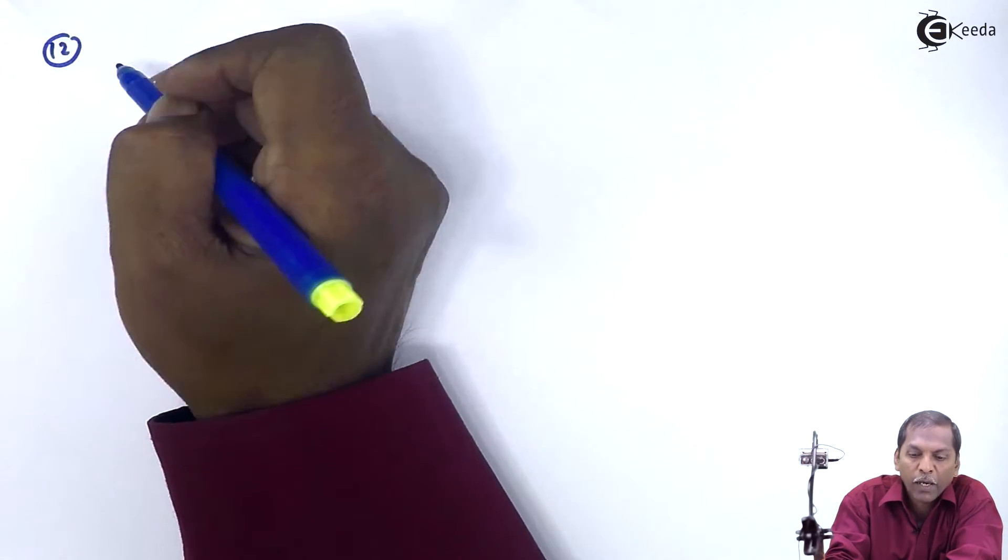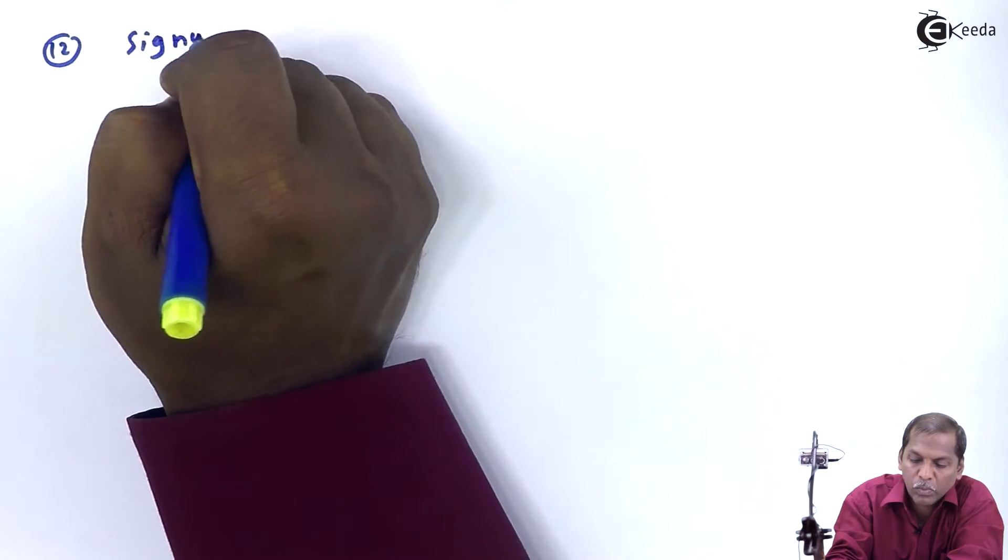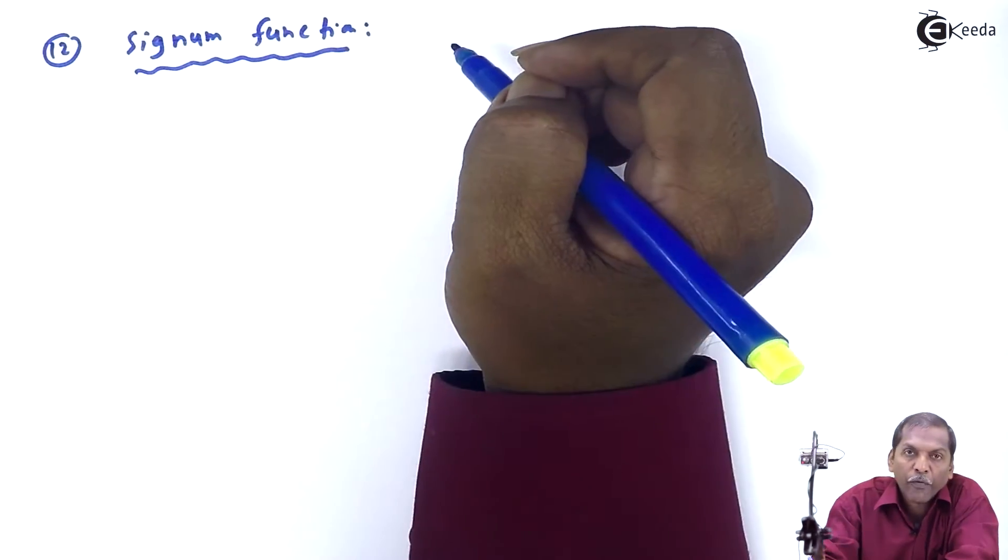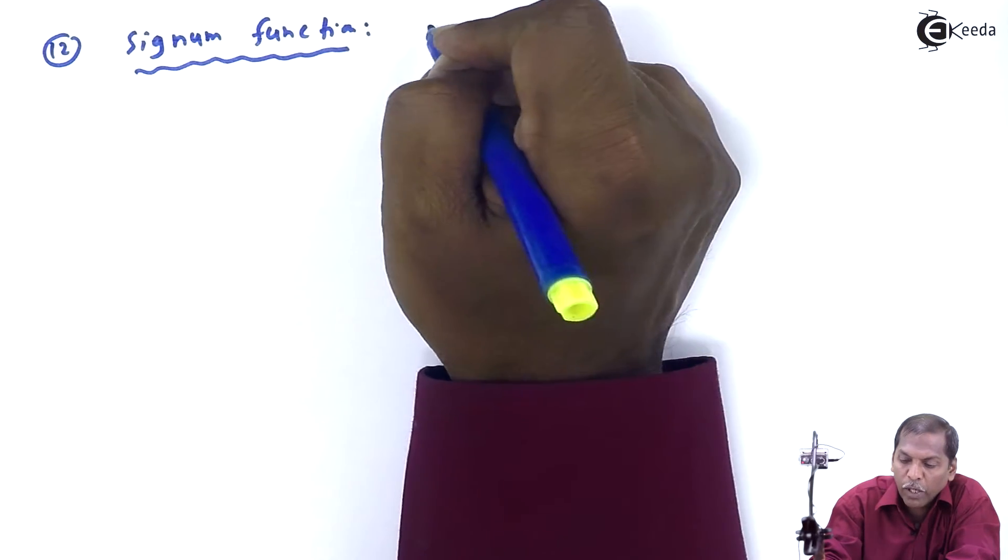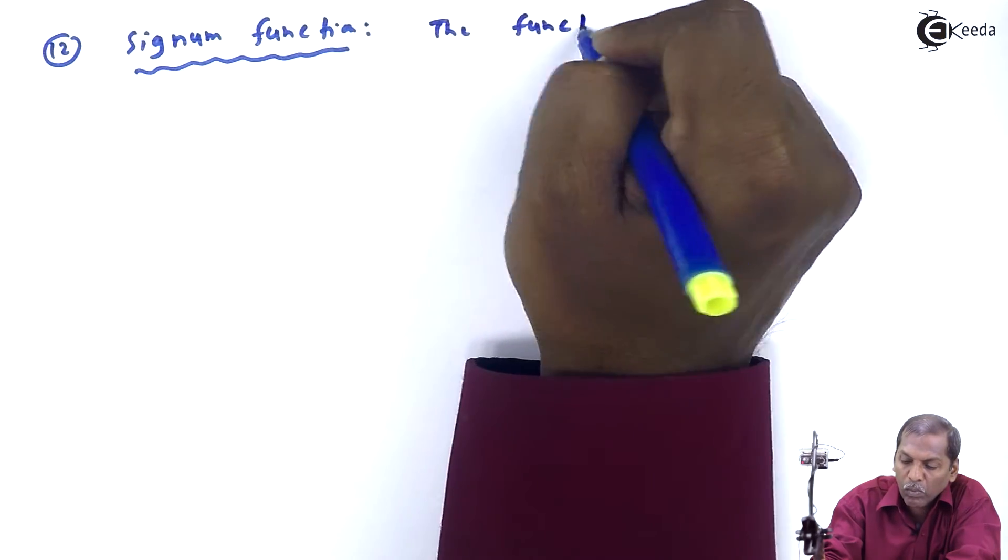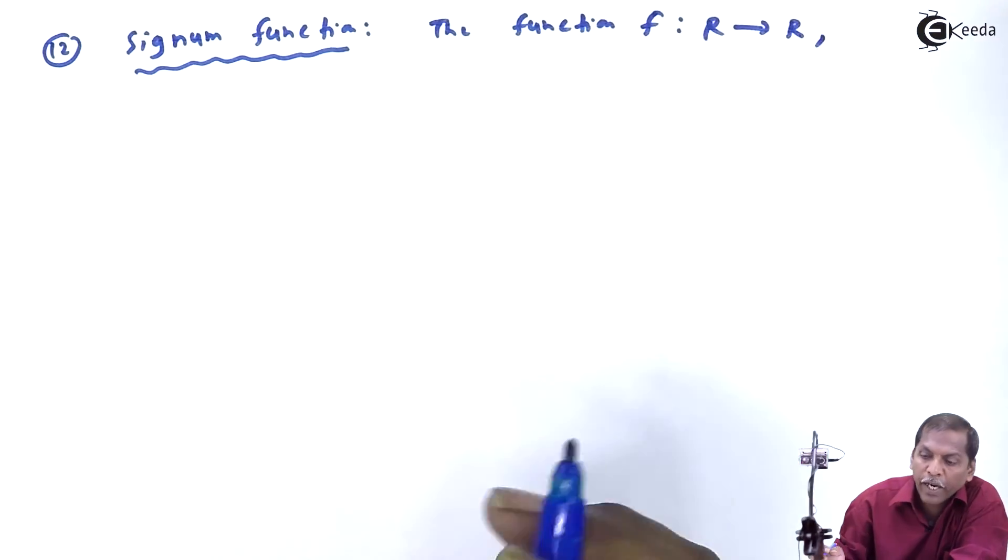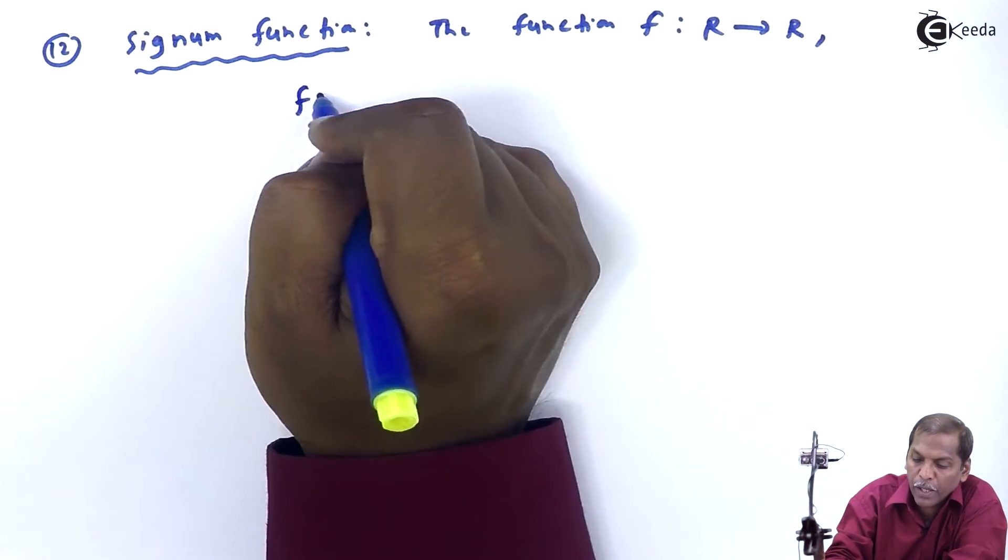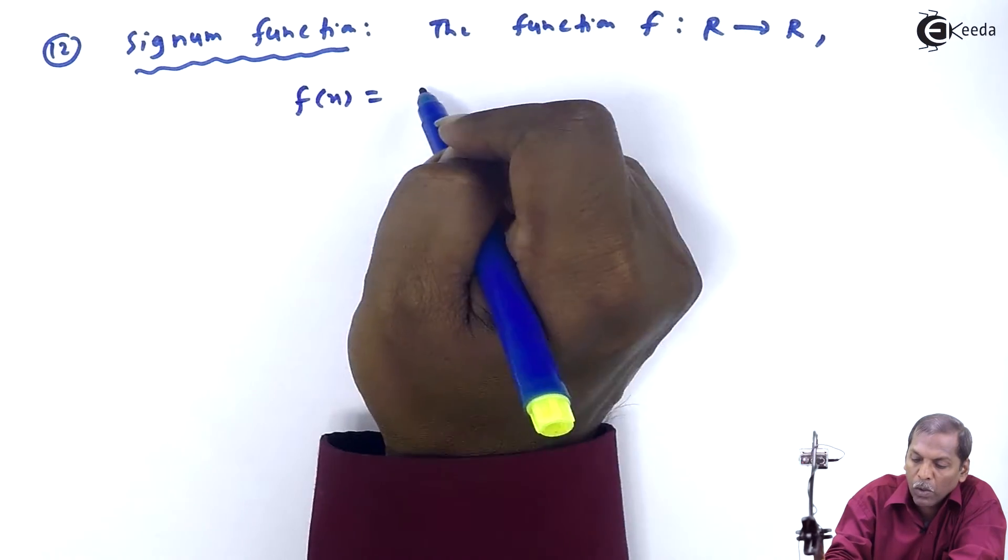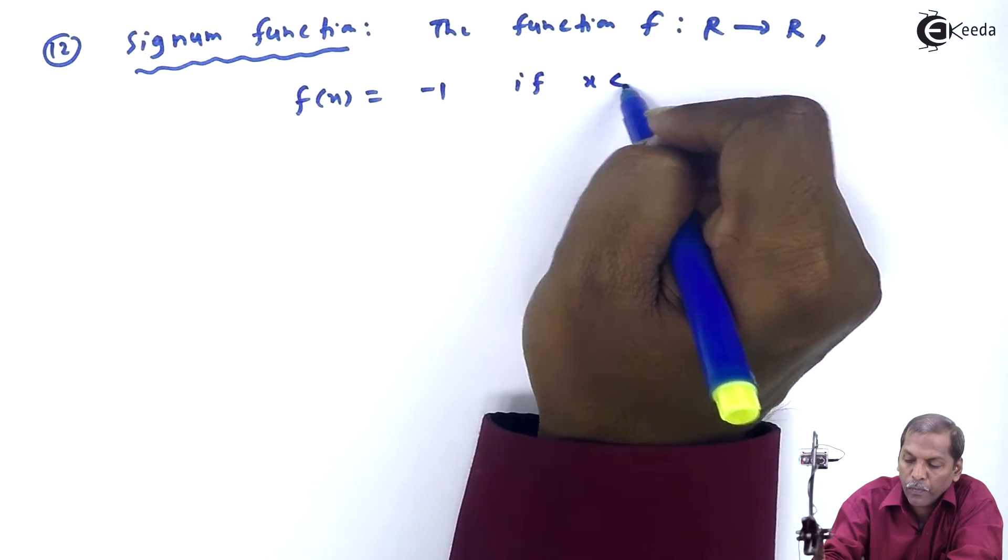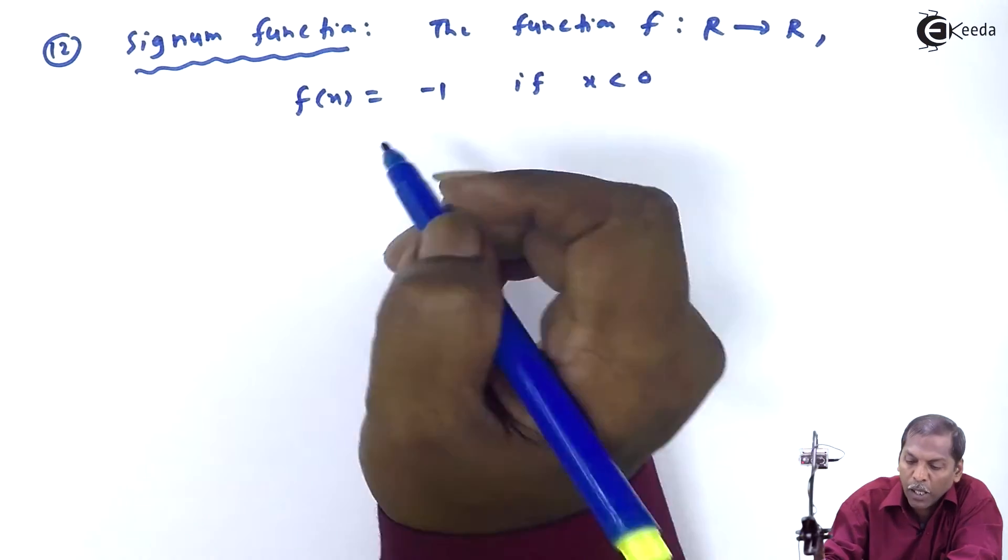Signum Function: The function f from R to R, defined as f(x) equals -1 if x < 0,